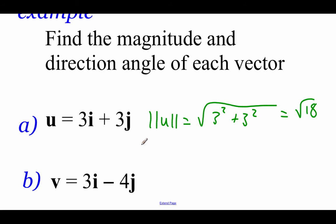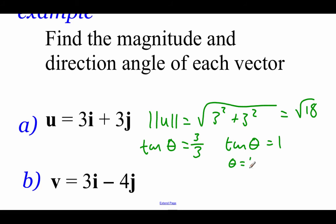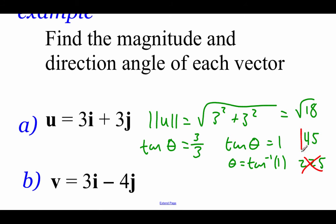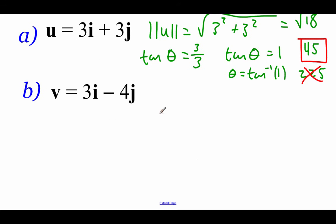To find the direction angle for vector u, the tangent of theta equals b over a, which is 3 over 3, so tangent of theta equals 1. Rewriting as an inverse: theta equals inverse tangent of 1. This occurs at 45 degrees and at 225 degrees on the unit circle. Since our vector has a positive x value and a positive y value, it must be a first quadrant angle — so the direction angle is 45 degrees.